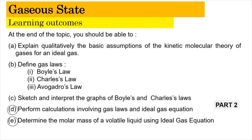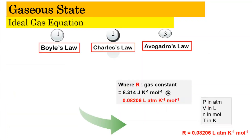The learning outcomes for A, B, and C we have looked at in the previous video, which is part 1. So in this video, let's start with part 2. The ideal gas equation came from the combination of three gas laws: Boyle's law, Charles' law, and Avogadro's law.